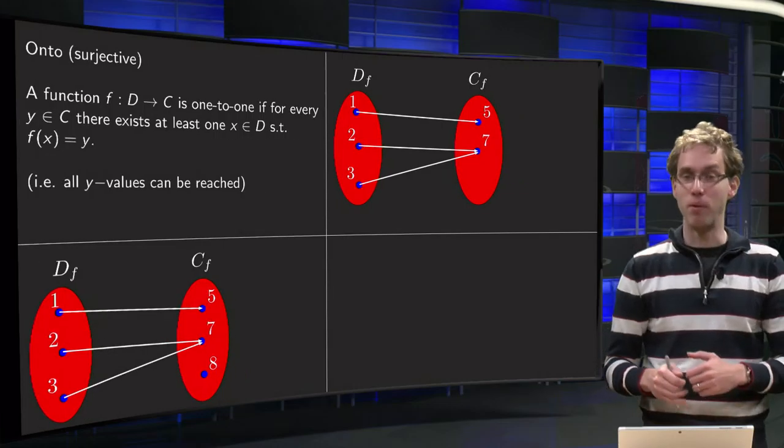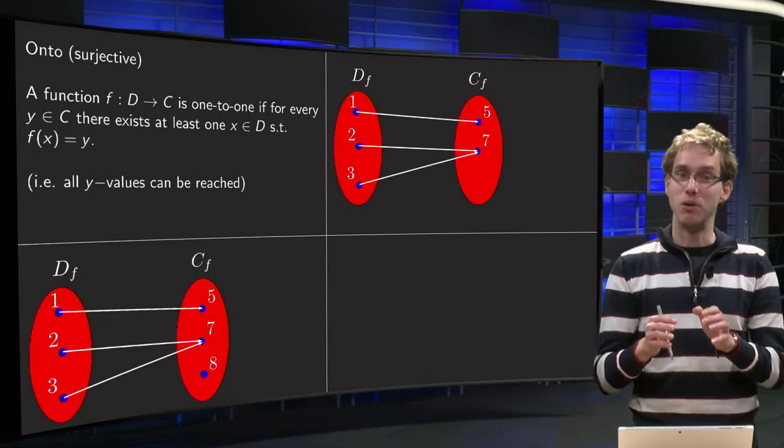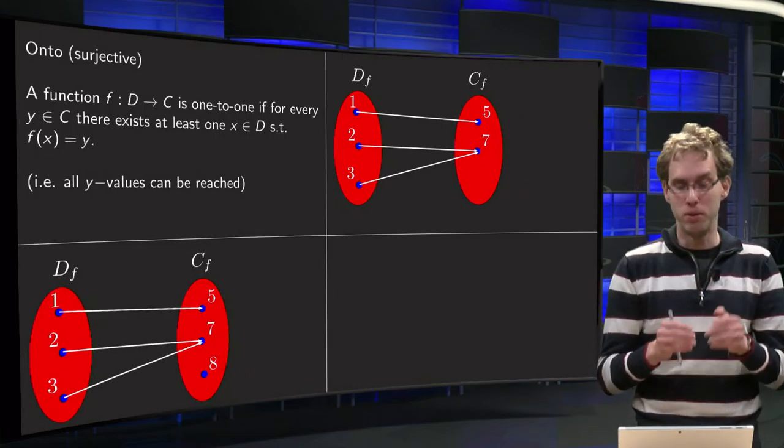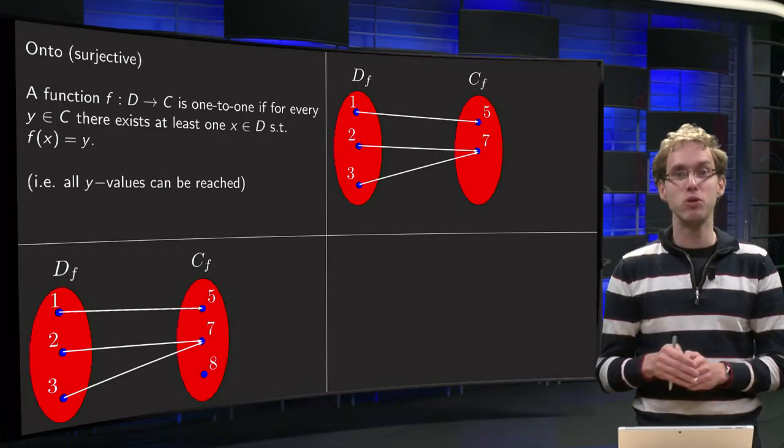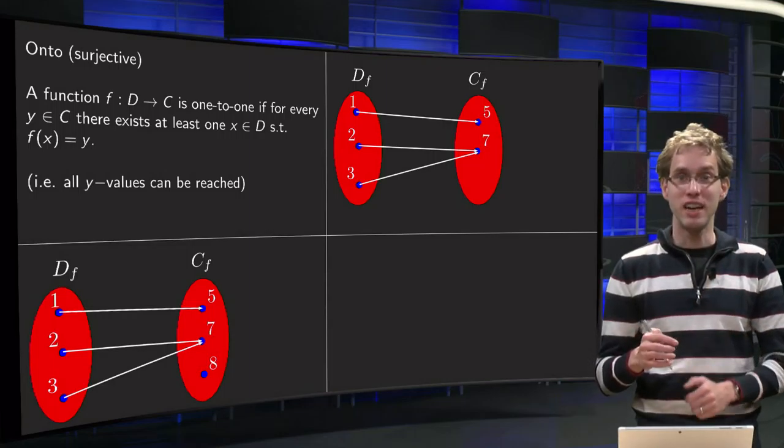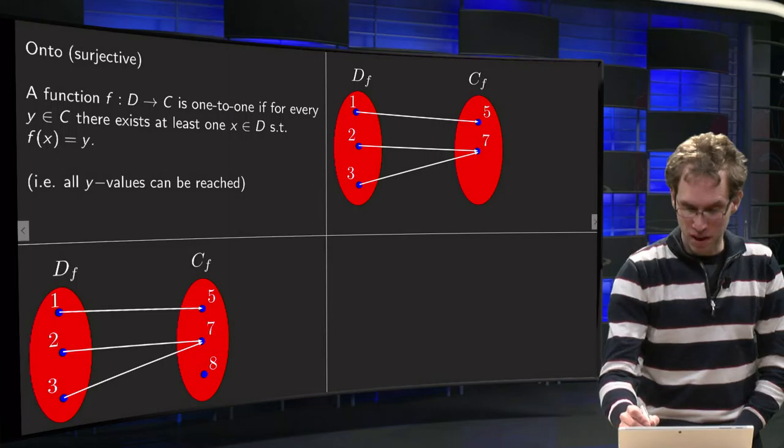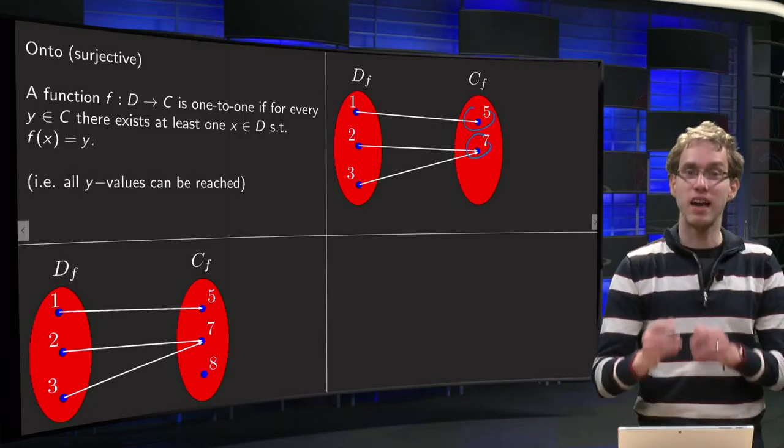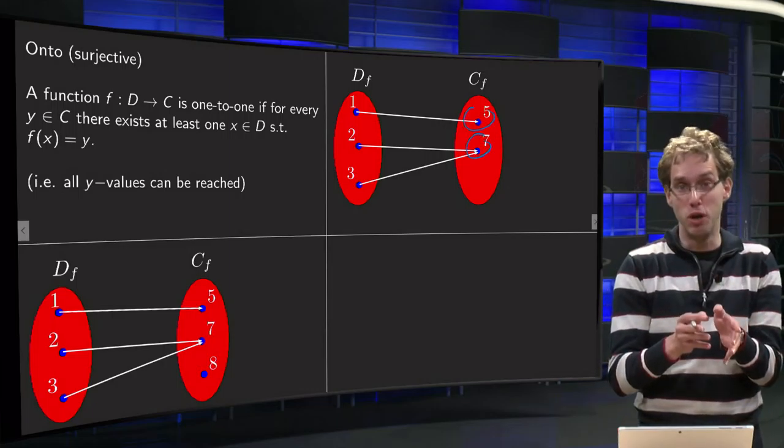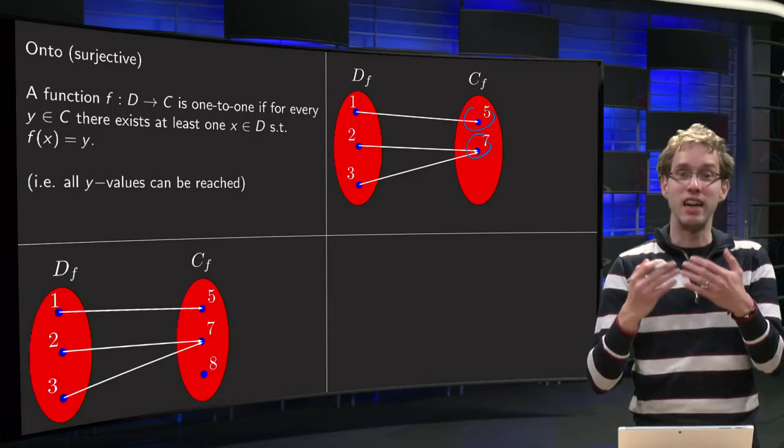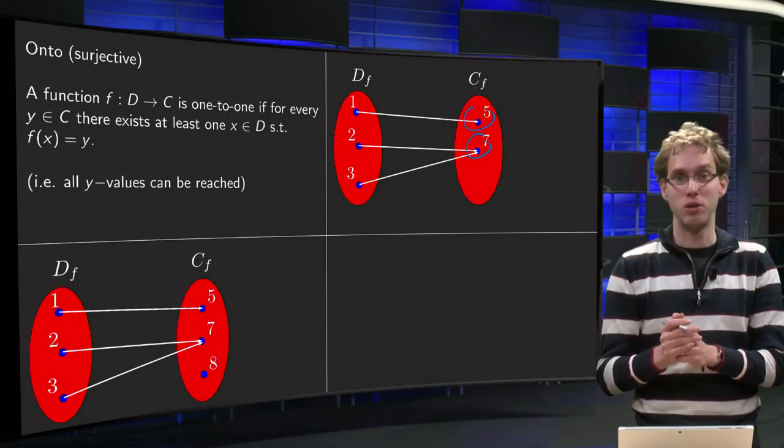Second example, where we just leave out the 8. So a new function going from a domain with 3 numbers to a codomain of 2 numbers. Now in the second example, both the 5 and the 7 can be reached by x's from the domain. So that means the second function is in fact onto.